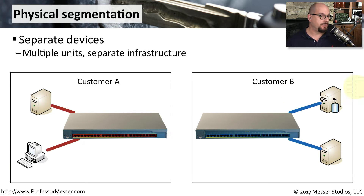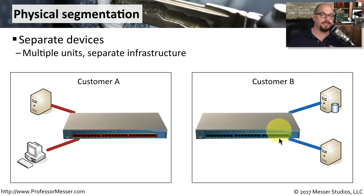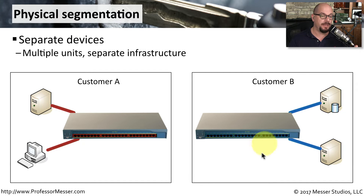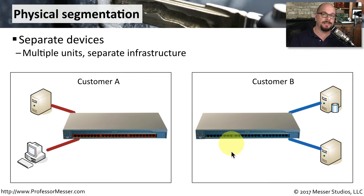Here's a good example of physical segmentation with Customer A and Customer B. You can see that Customer A has two devices on their single switch, and Customer B also has two devices on their switch. Because they are physically segmented, there's no data that can move between Customer A or Customer B. One of the challenges with this type of configuration is that it can be relatively inefficient — you've got 24-port switches with only two devices on them, and the other interfaces aren't used. You've also got some scalability problems. What if you had 1,000 or 5,000 customers? You would need a lot of space in your data center to install many separate switches when you're physically segmenting.